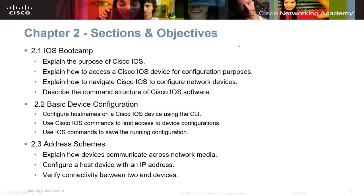Let's take a look at Chapter 2. We're going to have three parts. We're going to talk about the IOS Bootcamp and what the Cisco IOS is, the basic device configuration of Cisco devices, and then we're going to look at address schemes — how devices communicate across the network media, and configuring a host device with an IP address.